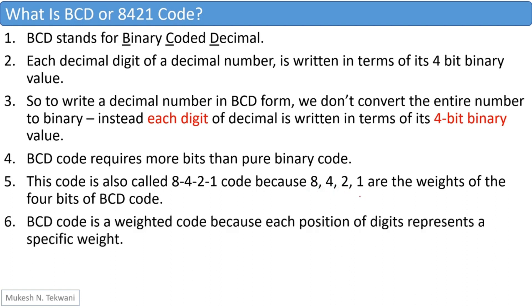BCD code is a weighted code because each position represents a specific weight. We have the weight 1 for the LSB, then weight 2 for the next bit, then weight 4, and the most significant bit carries the weight 8. So it is a weighted code.